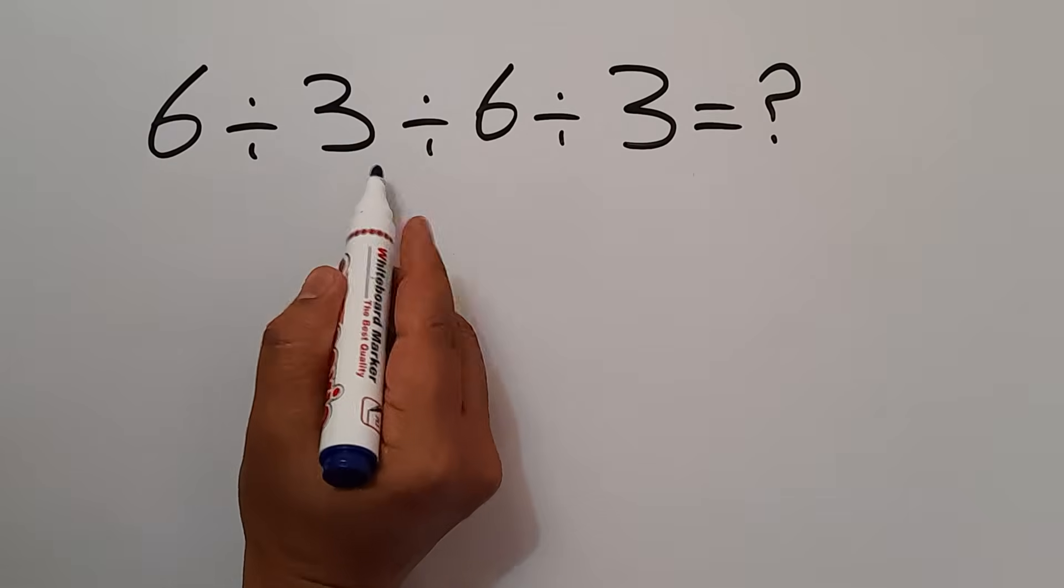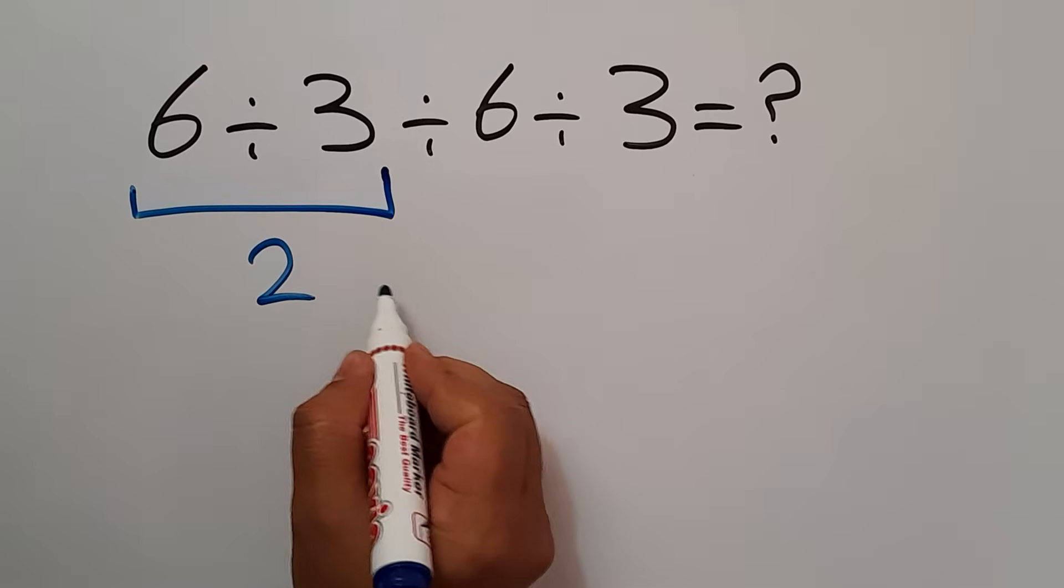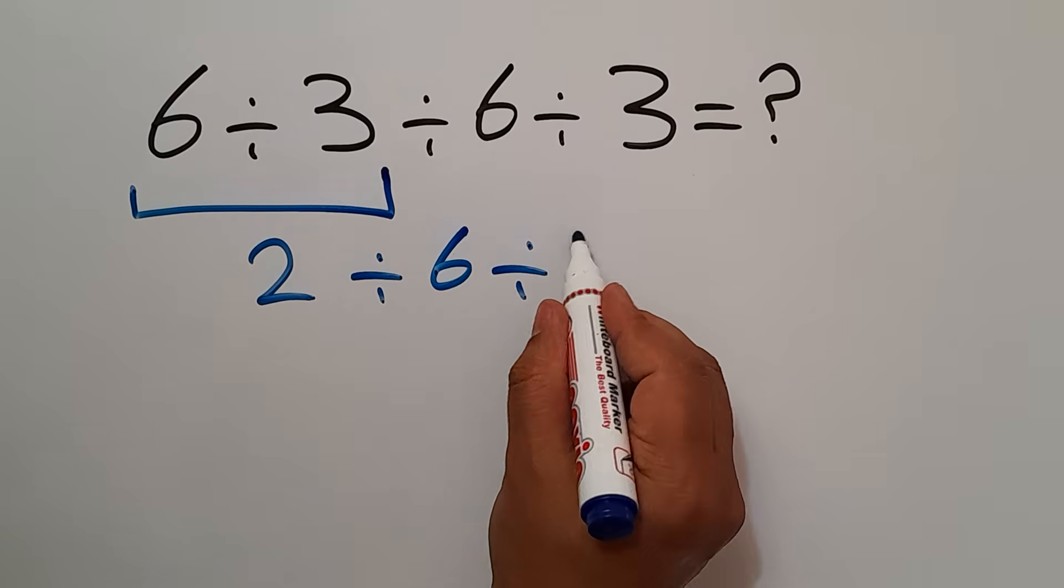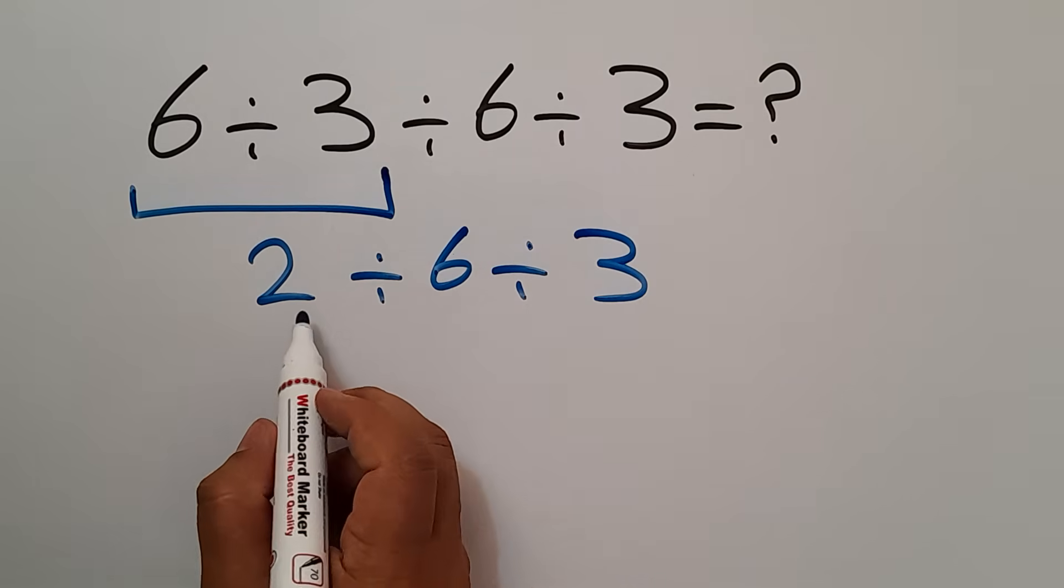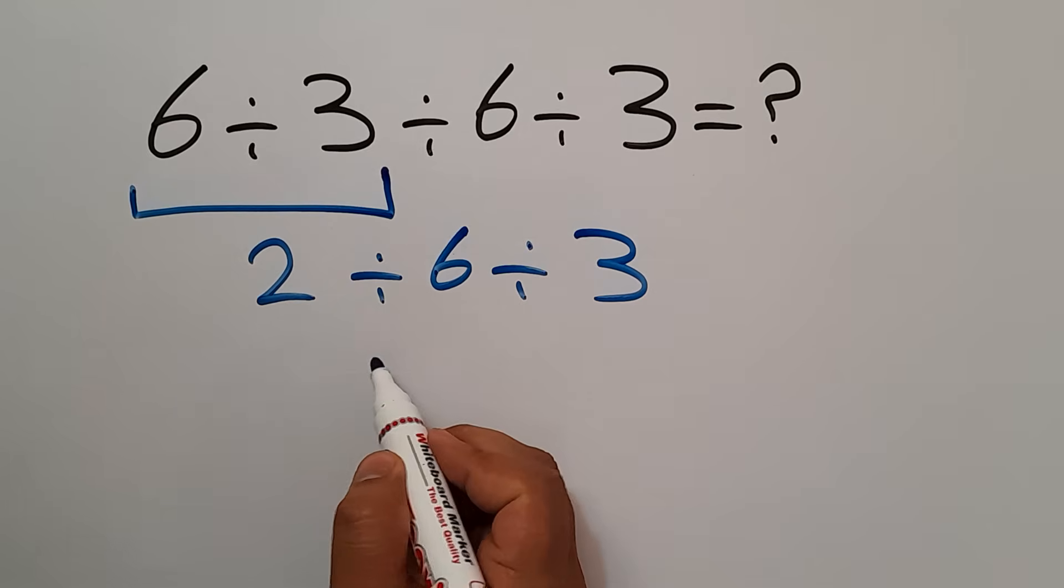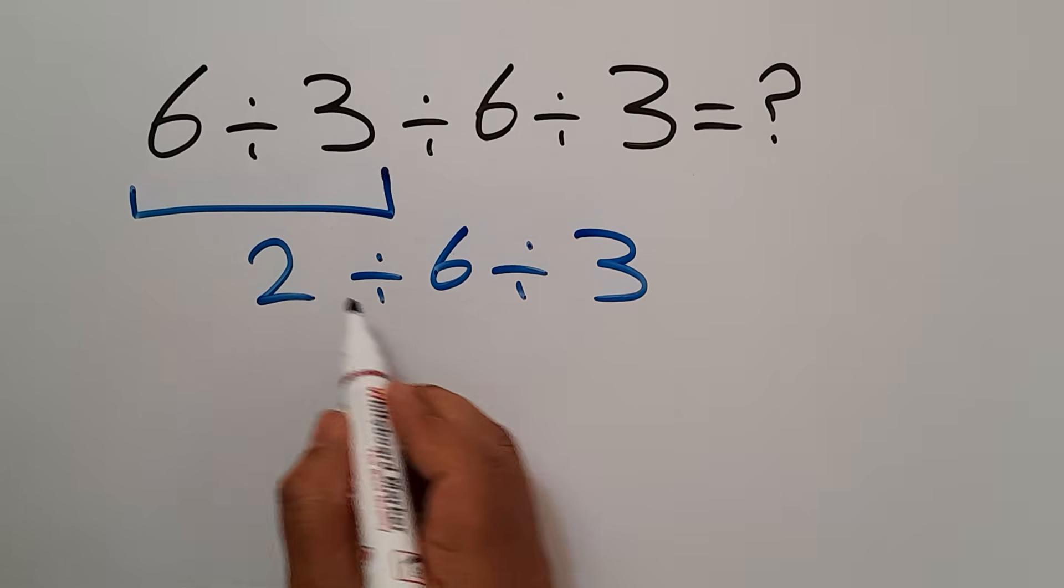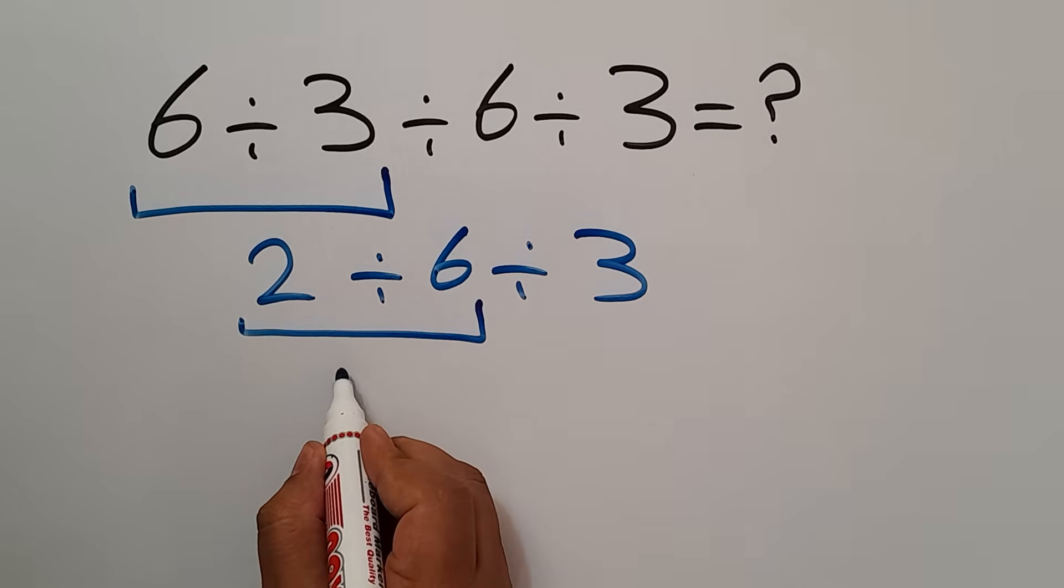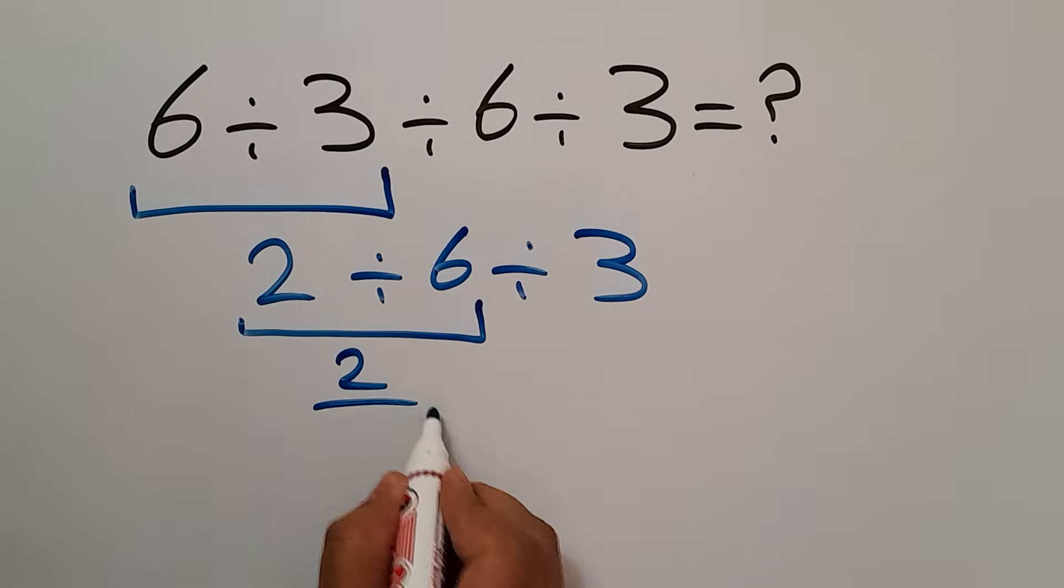6 divided by 3 gives us 2. So we have 2 divided by 6 divided by 3. Now we have to do this division, not this division. 2 divided by 6 gives us 2 over 6.